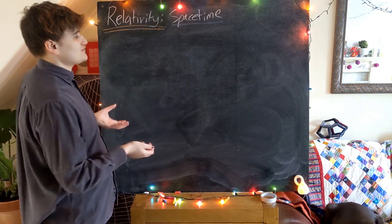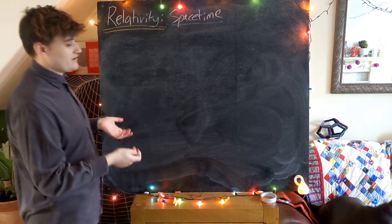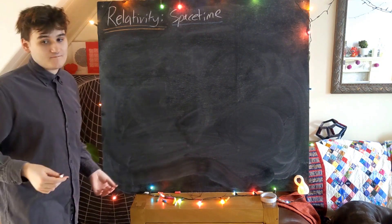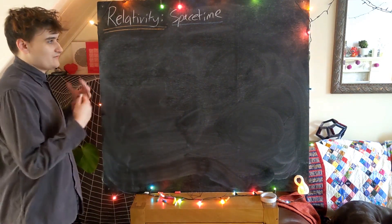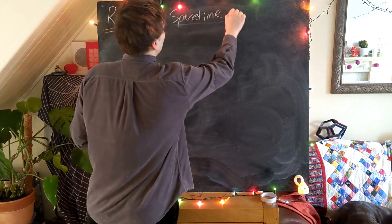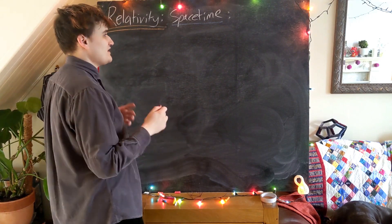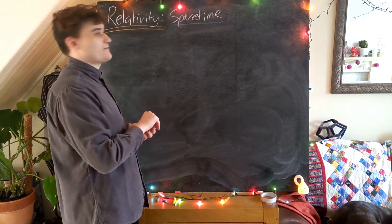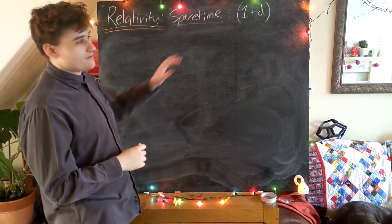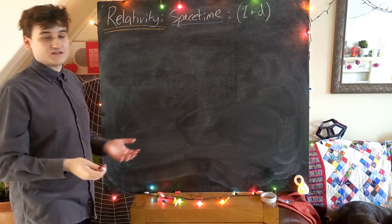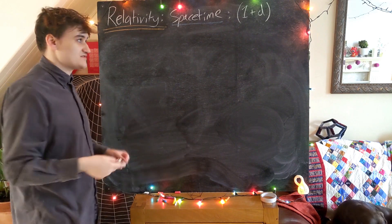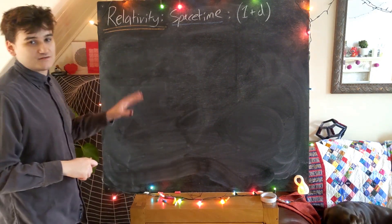I'll say more about this shortly, but for now let's just formalise space-time. So I introduce you to the space-time of our universe in the last video — it's a four-dimensional space-time where we have one time-dimension and three space-dimensions. We usually like to express the dimensionality of our space-time as being 1+d, where d refers to the number of spatial dimensions and the 1 just refers to the time-dimension. So in our universe we have three spatial dimensions and one time-dimension: a four-dimensional space-time.